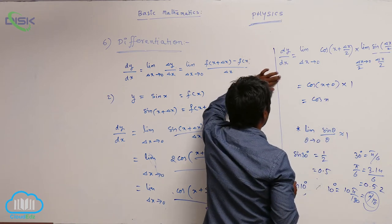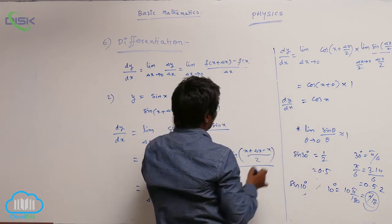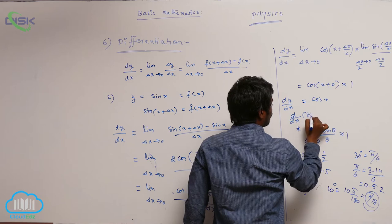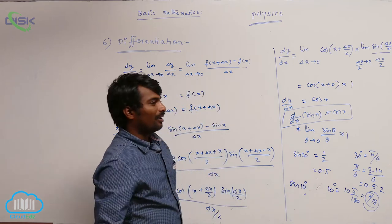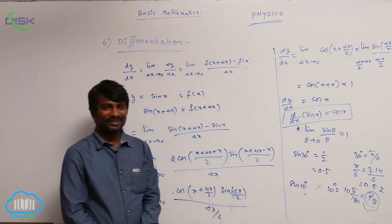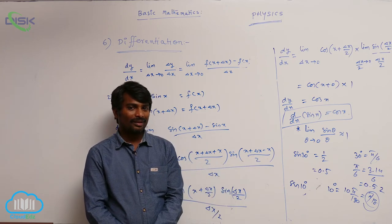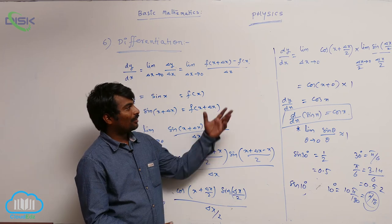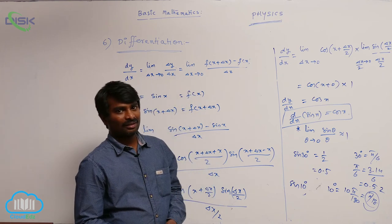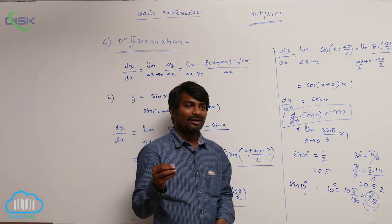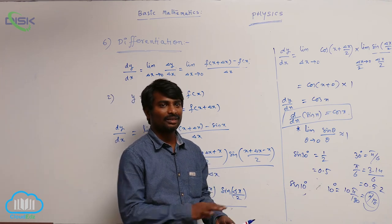So, cos(x plus 0) into 1 — it is cos x. That means dy by dx of sin x is equal to cos x. Because many trigonometric ratios we have, I can't do a proof for each — it is not important for us in physics. That is why I will tell you some formulas. Try to remember all those, and whenever needed, we will directly use those formulas.